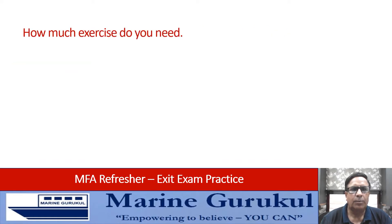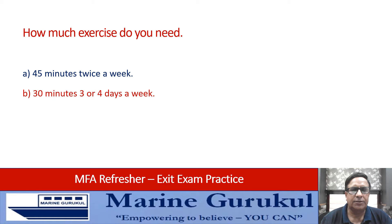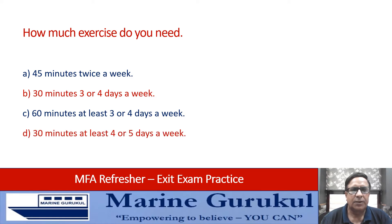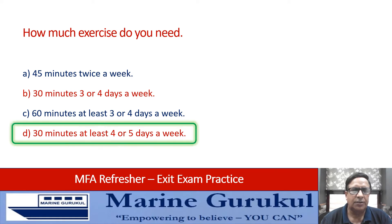How much exercise do you need? Options: 45 minutes twice a week, 30 minutes three or four days a week, 60 minutes at least three to four days a week, or 30 minutes at least four or five days a week. The answer is D — 30 minutes for four to five days a week.